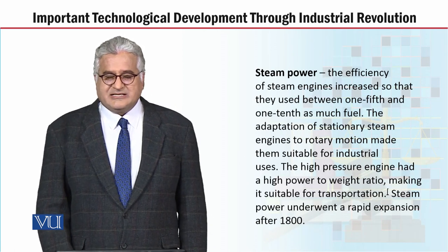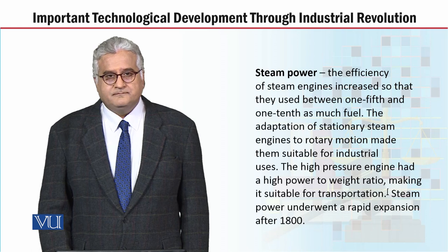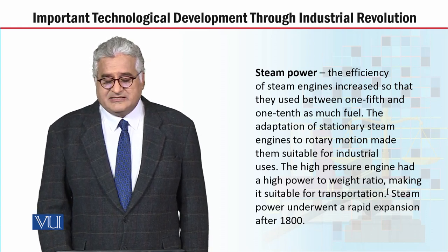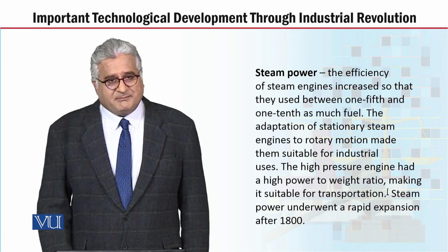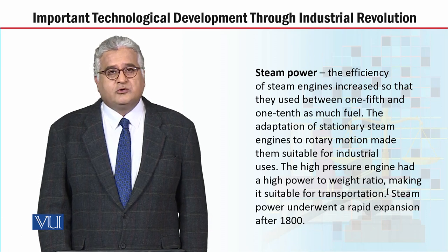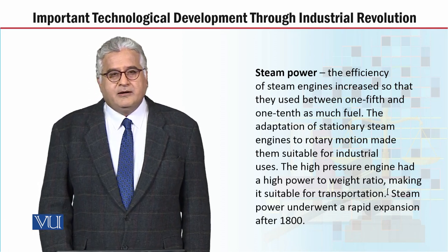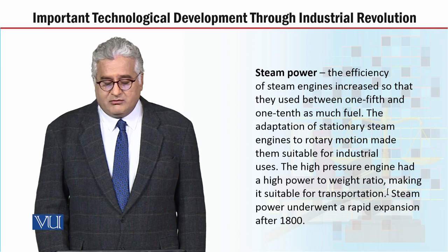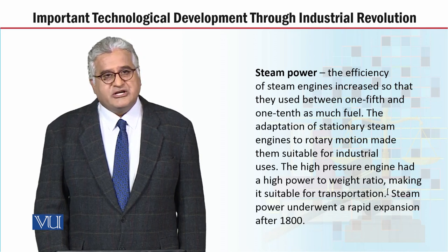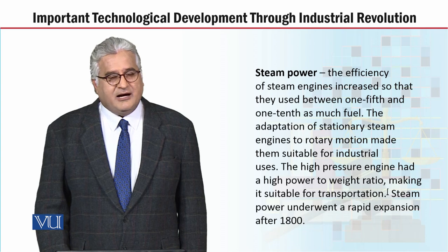Now let's move on to discuss steam power and what role it played in industrial development. The efficiency of steam engines increased so that they used between one-fifth and one-tenth as much fuel. The adaptation of stationary steam engines to rotary motion made them suitable for industrial uses. The high pressure engine had a high power to weight ratio, making it suitable for transportation. Steam power underwent a rapid expansion after 1800.